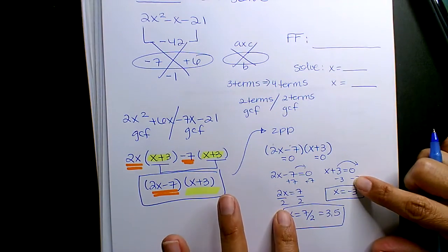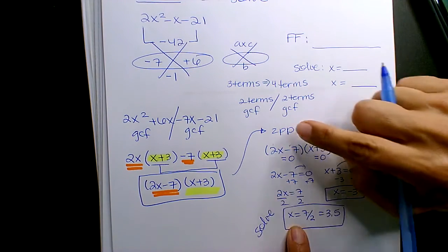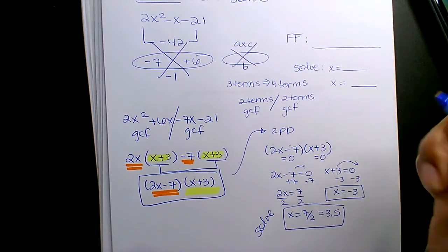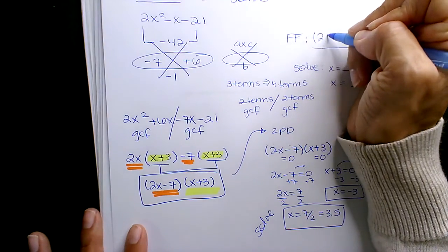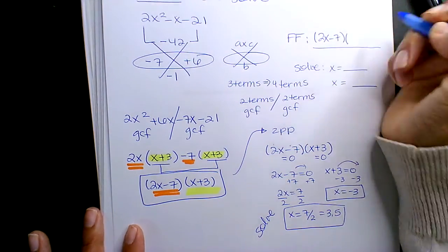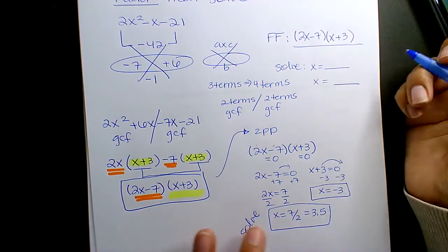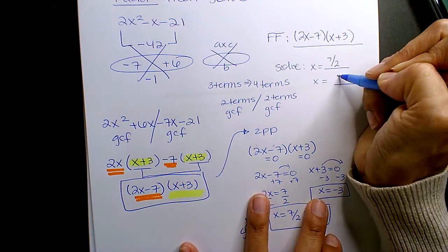So this is solving. If they're asking you to solve, you have the zero product property, ZPP, but if they're asking you to factor, oh, I know my answers are here. Alright, I'll write them. This is factored form, the two binomials, and so 7 halves, negative 3.